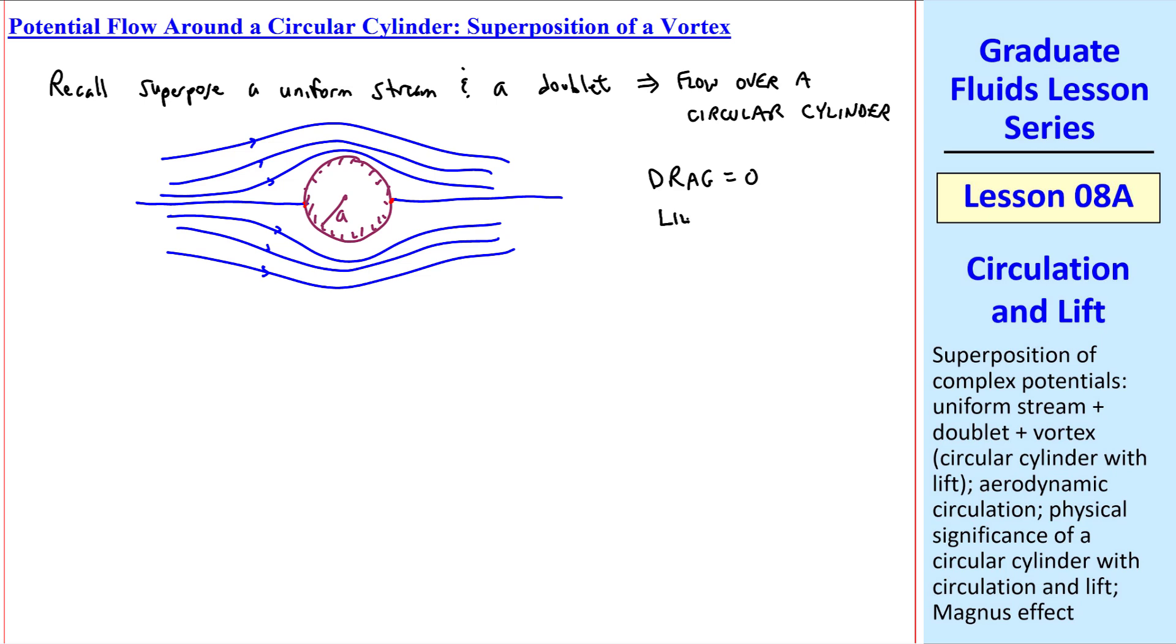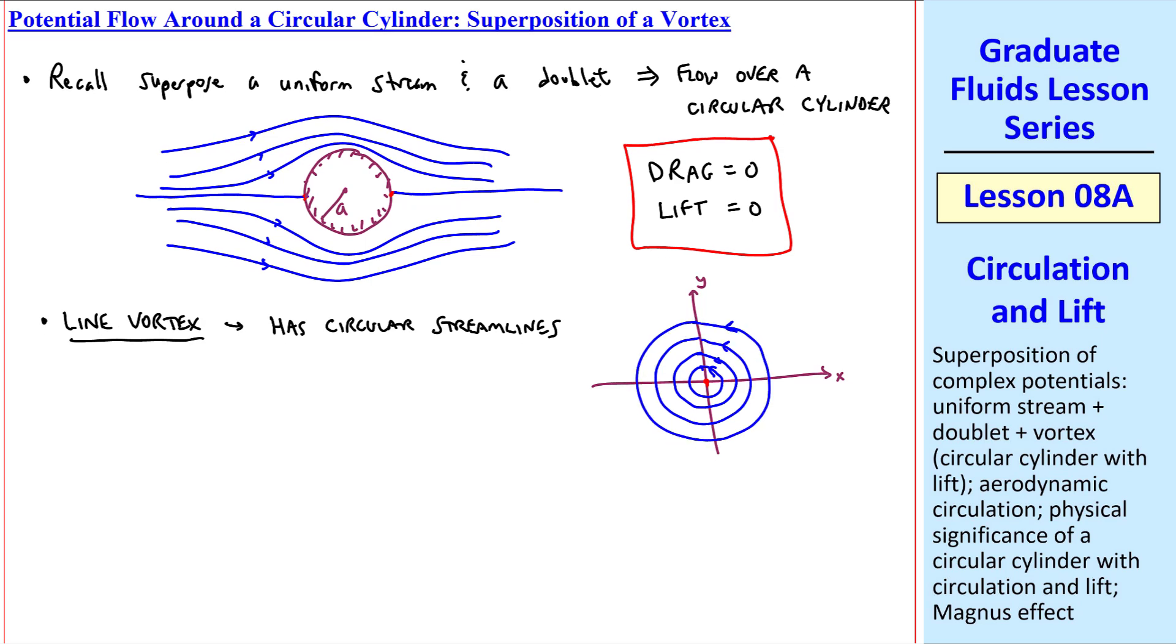Recall that both the drag and the lift are zero in this case. Now consider a line vortex, which we also discussed previously. It has circular streamlines, so for a vortex at the origin, the streamlines are concentric circles around the origin. There are an infinite number of streamlines at various radii, one of which will have radius a. In other words, this streamline will coincide with this streamline, since our cylinder is also at the origin.